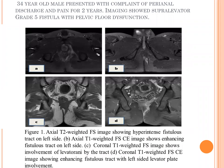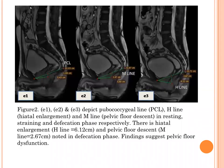A 34-year-old male presented with perianal discharge and pain for 2 years. Imaging showed a supra-levator Grade 5 fistula with pelvic floor dysfunction. Figures E1, E2, and E3 demonstrate the pubococcygeal line, H-line, and M-line in the straining and defecation phases respectively. Hiatal enlargement and pelvic floor descent were noted in the defecation phase, findings suggestive of pelvic floor dysfunction.